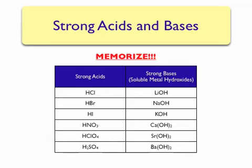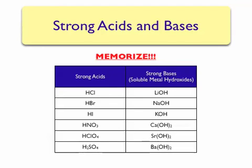Strong bases are soluble metal hydroxides and include lithium hydroxide, sodium hydroxide, potassium hydroxide, calcium hydroxide, strontium hydroxide, and barium hydroxide. Although you must memorize this list of strong bases, they are very easy to distinguish. If you look at the solubility rules, you will find that most hydroxide-containing compounds are insoluble in water. The exceptions to this rule consist of the strong bases. Once again, memorize this list of strong acids and strong bases. Any other acid or base you encounter in this course that does not appear in this list can be considered weak.